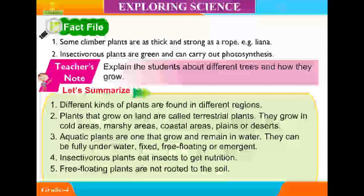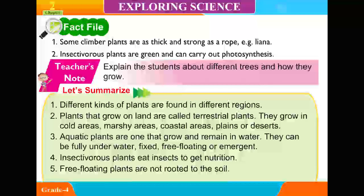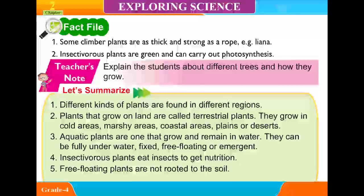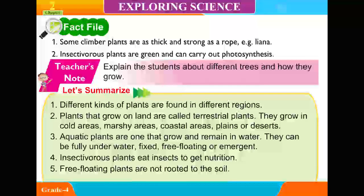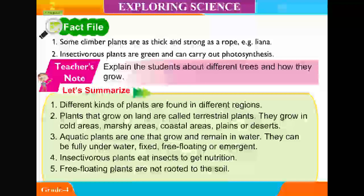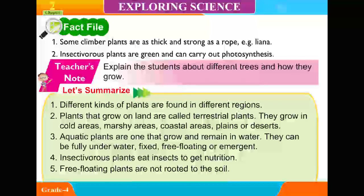Summary. Different kinds of plants are found in different regions. Plants that grow on land are called terrestrial plants. They grow in cold areas, marshy areas, coastal areas, plains, or deserts. Aquatic plants are ones that grow and remain in water. They can be fully underwater, free floating, or emergent. Insectivorous plants eat insects to get nutrition. Free floating plants are not rooted to the soil.